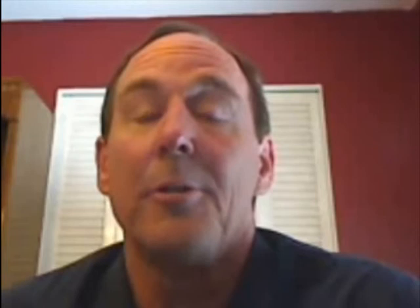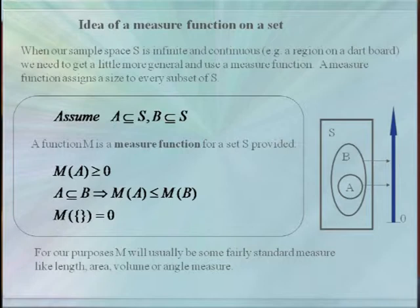We have one more definition for probability to consider, and this one is useful for providing a theoretical result in infinite and non-uniform cases. This requires the idea of a measurement function. The function M is said to be a measurement function for a set S if it behaves the way you normally think of measuring things. The measurement gives us some positive number, and the bigger our sets get, the bigger our measurement becomes. We'll typically use standard measures like length, area, volume, or angle measurement.